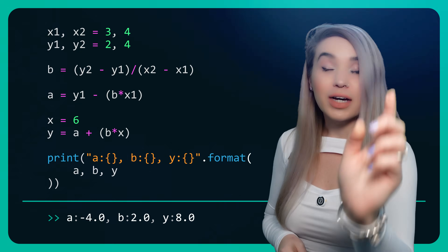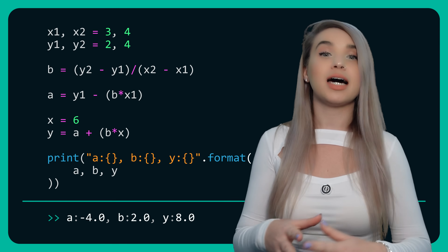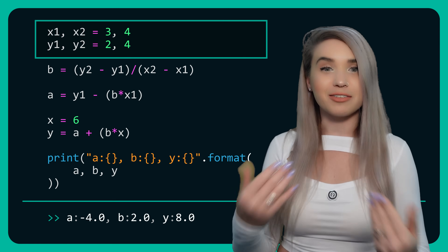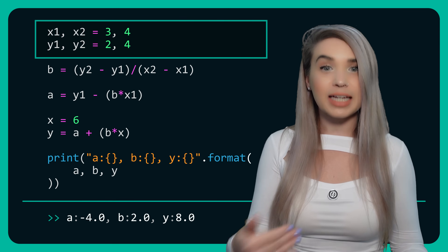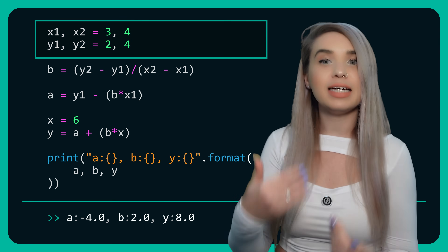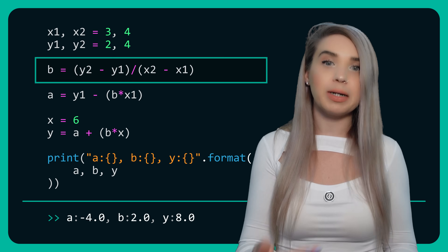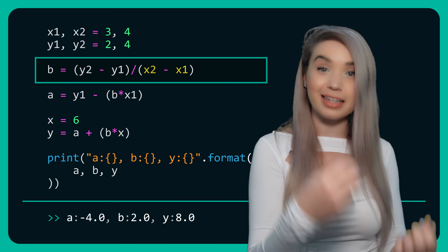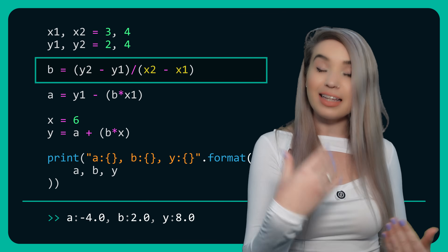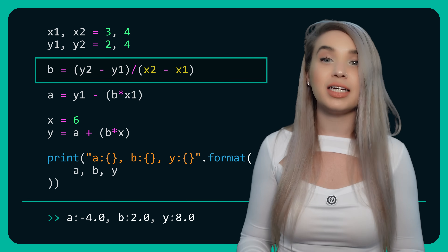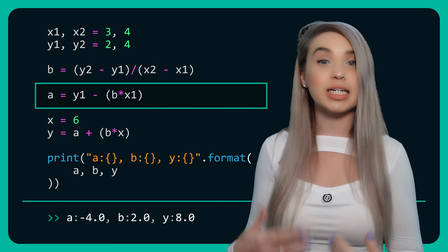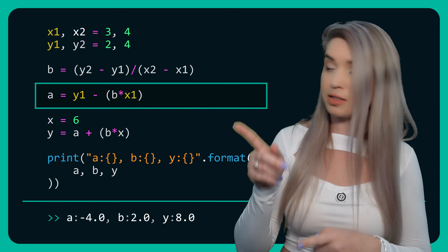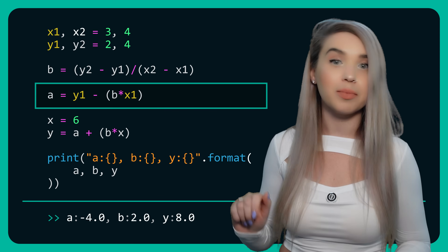Now in terms of code, we will first create our data points, assigning their values, and then we will calculate the slope by subtracting the y's and the x's. Then we will calculate the y-intercept using one of our data points — the first in this example.